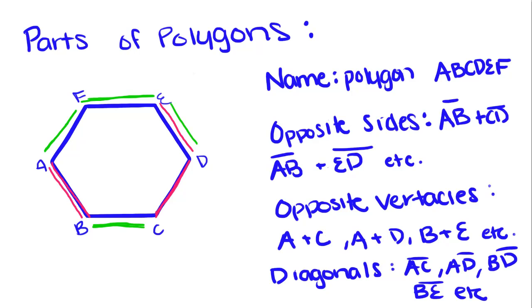Opposite vertices are just that — they're exactly opposite one another. So A is opposite C. D is opposite A. B is opposite F.